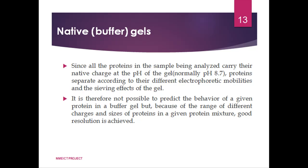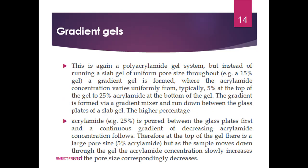Gradient gel is another polyacrylamide gel system where, instead of a slab gel of uniform pore size, a gradient gel is formed. Acrylamide concentration varies uniformly from 5% at the top to 25% at the bottom of the gel. The gradient is formed with the help of a gradient mixer run down between the glass plates of the slab gel. Higher percentage acrylamide forms between the glass plates first, followed by a continuous gradient of decreasing acrylamide concentration. Therefore, at the top there is a large pore size, but as the sample moves down, pore size correspondingly decreases. Gradient gels are normally run as SDS-PAGE with a stacking gel.